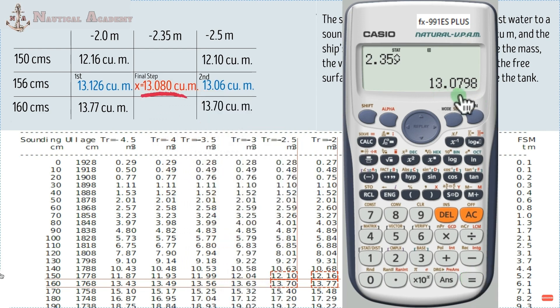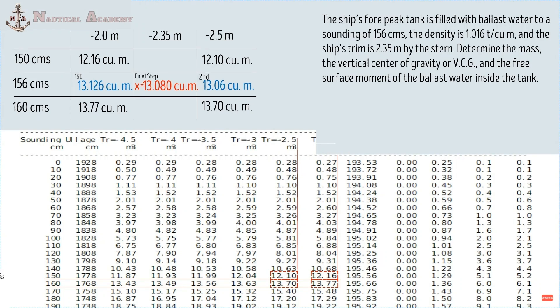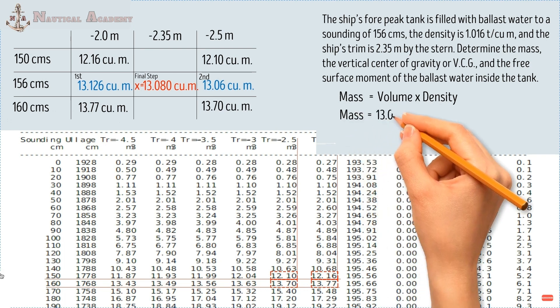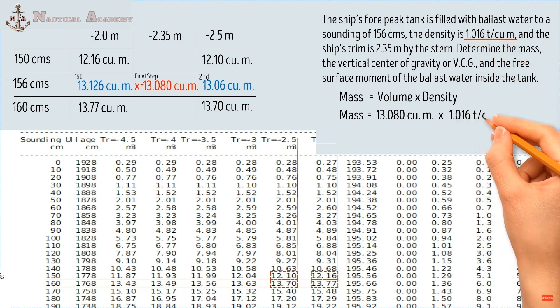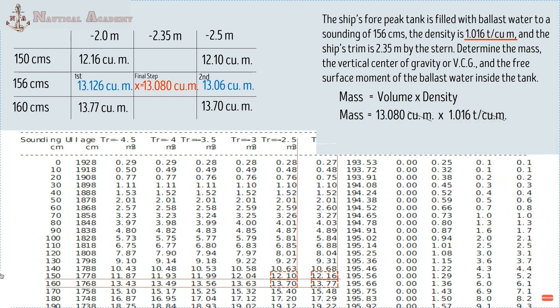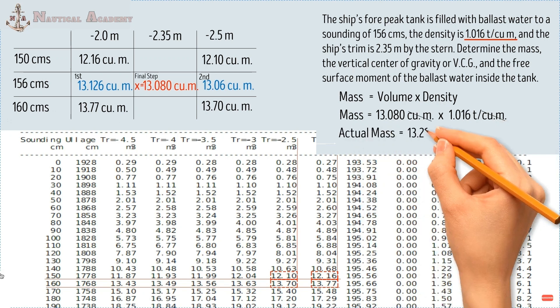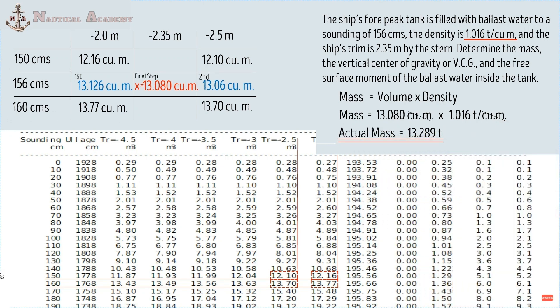This is just one method of interpolation using a calculator; you can use any method you are familiar with. Since we now have the volume, we need to find the mass using the formula: mass equals volume times density. Mass equals 13.080 cubic meters times 1.016 tons per cubic meter, giving an actual mass of 13.289 tons. This is the mass of the ballast water inside the four-peak tank at a sounding of 156 centimeters with a relative density of 1.016.